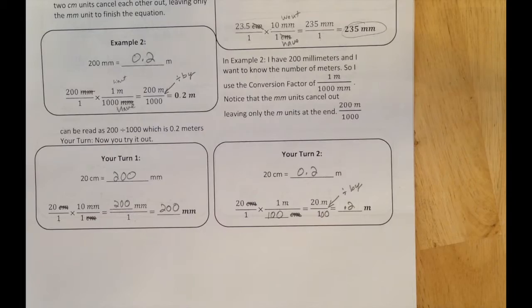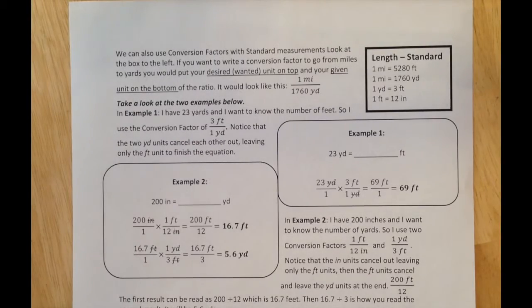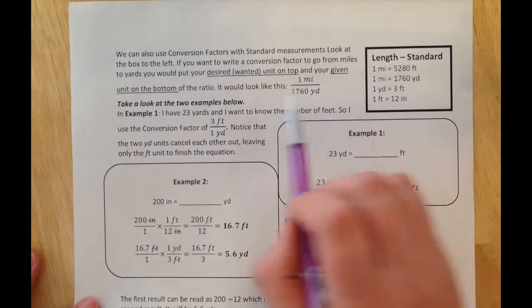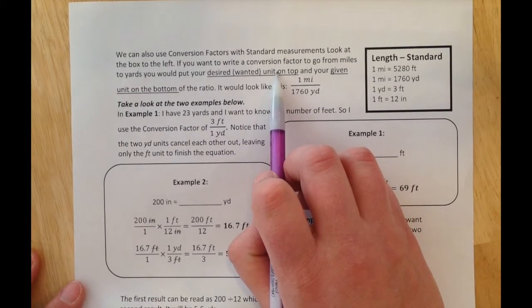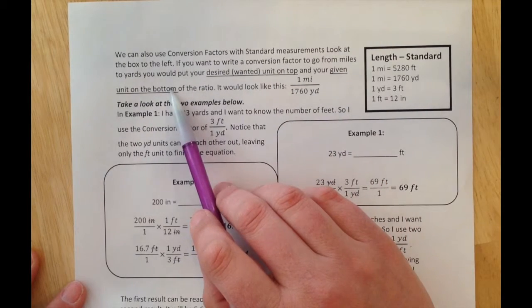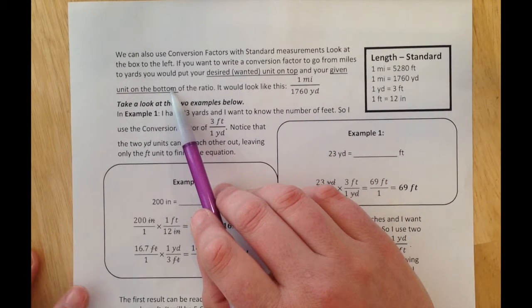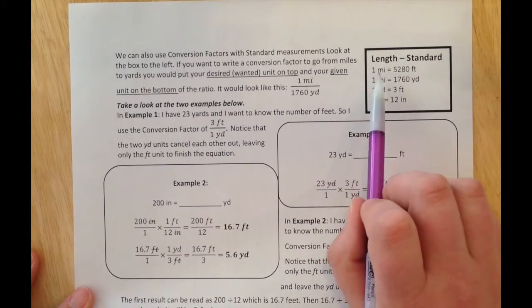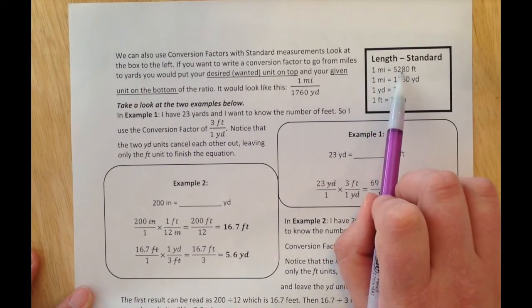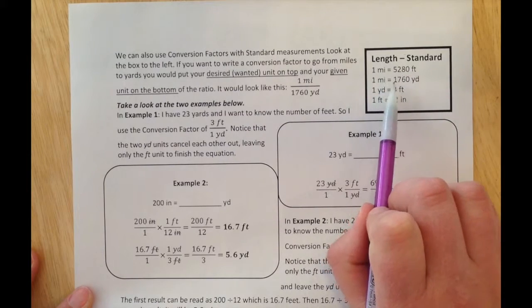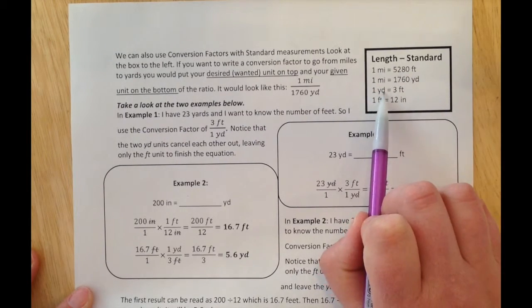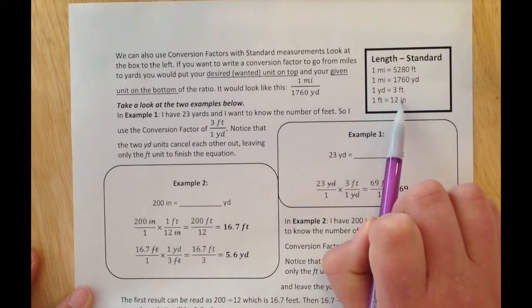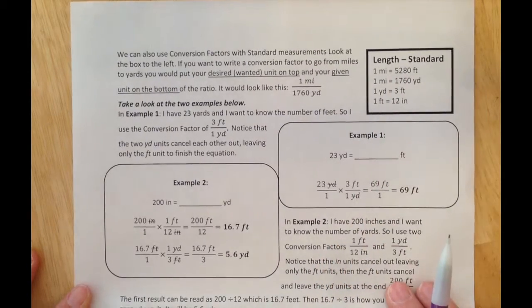Now you go ahead and try some on your own. Conversion factors aren't just for the metric system. We can also use conversion factors with standard measurement. Again, your desired unit is on top and on the bottom you'll have your given unit. For length in standard, we have 1 mile equals 5,280 feet, 1 mile equals 1,760 yards, 1 yard is 3 feet, and 1 foot is 12 inches.